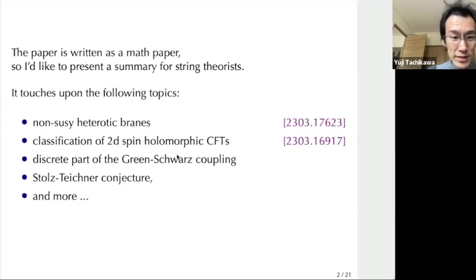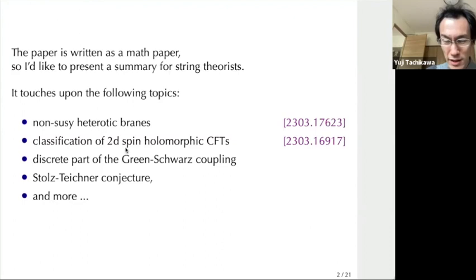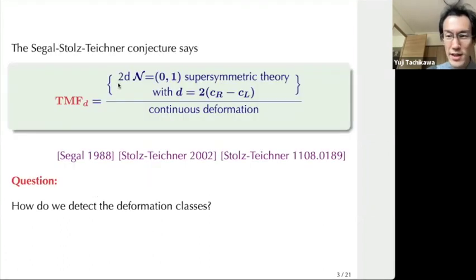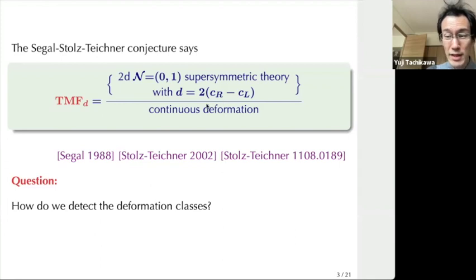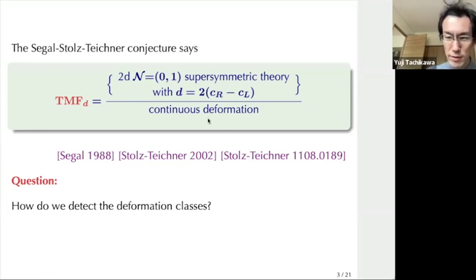It also discusses the discrete part of the Green-Schwarz coupling, the Stolz-Teichner conjecture, and so on. I decided to start the talk from the Stolz-Teichner conjecture. This conjecture says that a certain mathematical object — topological modular forms — which is an Abelian group subscripted by an integer d, in fact classifies two-dimensional N=0,1 supersymmetric theories with gravitational anomaly d. This quantity d is twice the difference between right-moving and left-moving central charge, up to continuous deformation preserving the supersymmetry. It has a long history but hasn't been taken up by physicists until very recently. In the last couple of years there has been interesting activity on this conjecture.